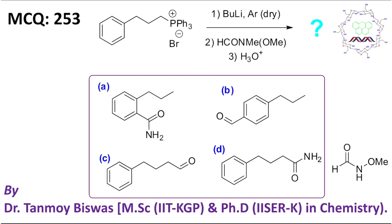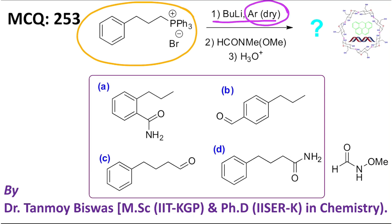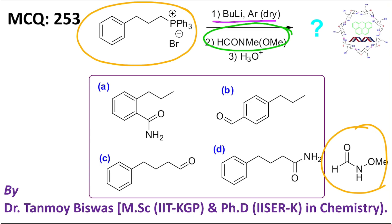This is actually a phosphonium bromide salt. In the first step, it is treated with butyl lithium in the presence of anhydrous argon — obviously the moisture may destroy the butyl lithium reagent. The second step involves a unique molecule; you may be confused. For your understanding, I have provided the structure of this reagent here — this is nothing but a Weinreb amide of formic acid. I have already discussed a dedicated lecture for this Weinreb amide, so please visit if you have any doubt. This is a very good reagent for carbonyl group preparation.